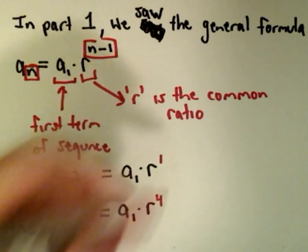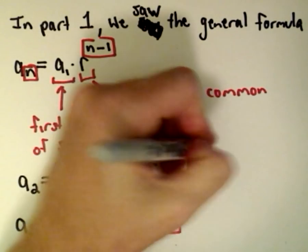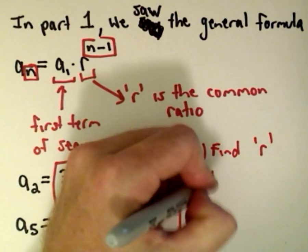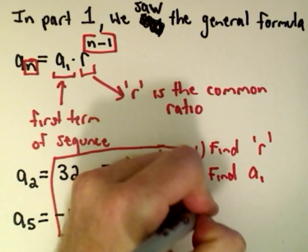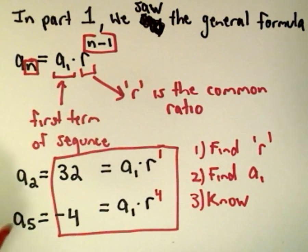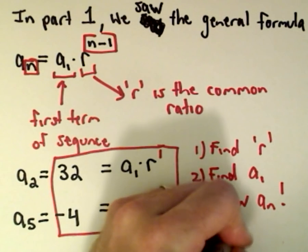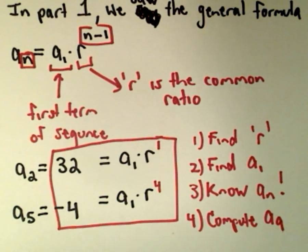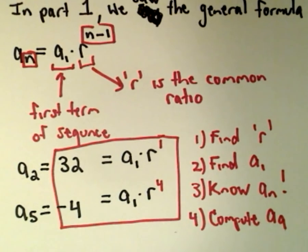Now I'm going to use these two equations. First, I'll figure out the value of r. Then I'll go back and find the value of a sub 1. At that point we'll know the formula for a sub n, and then I'll use that to compute a sub 9. So the game plan: find r, find a sub 1, know the formula, then figure out a sub 9.